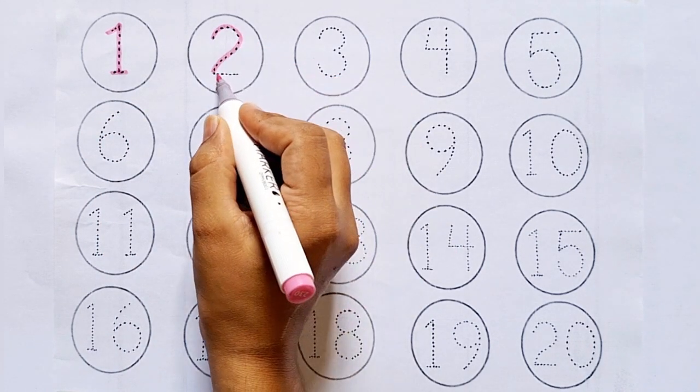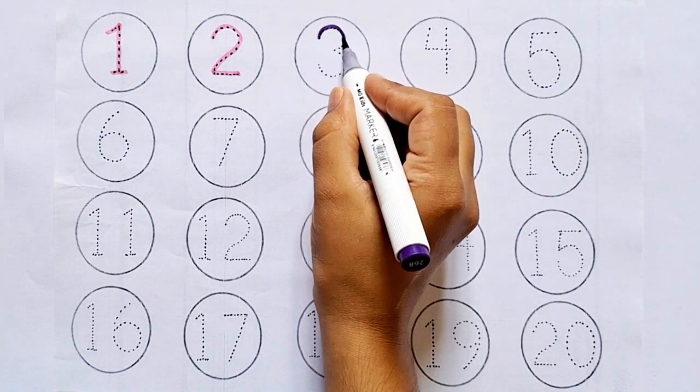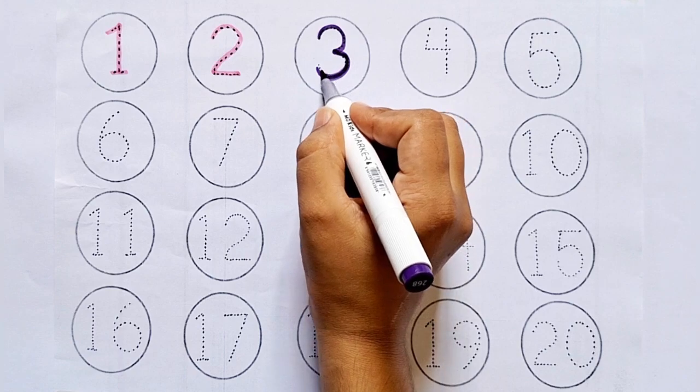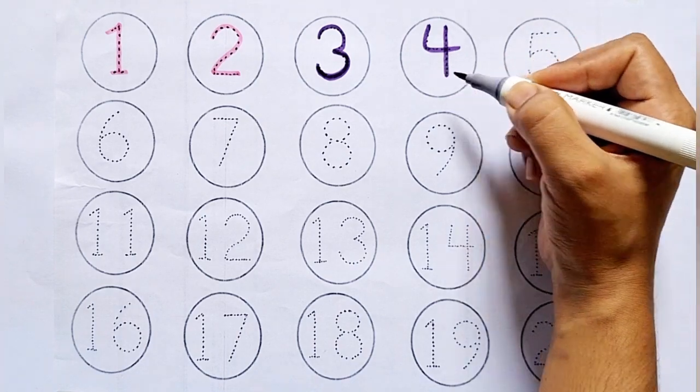4. This is 4. After 3 comes 4. 5. This is 5. After 4 comes 5.